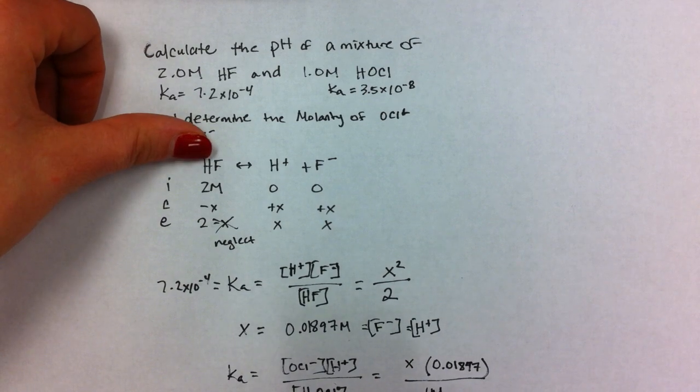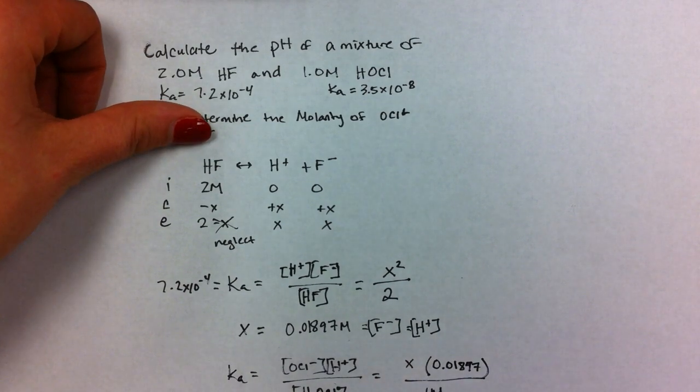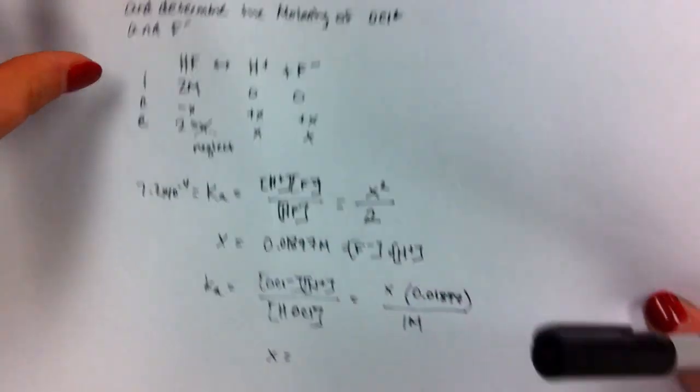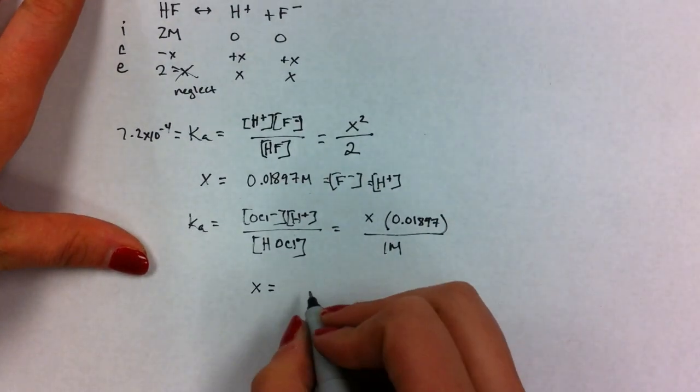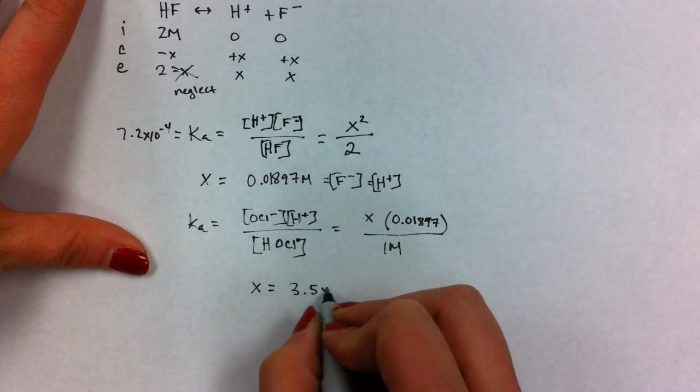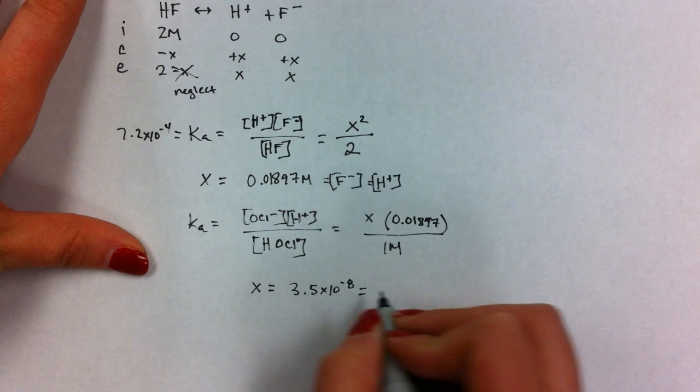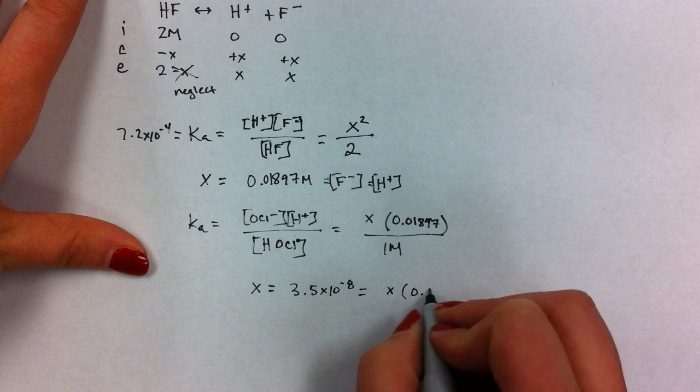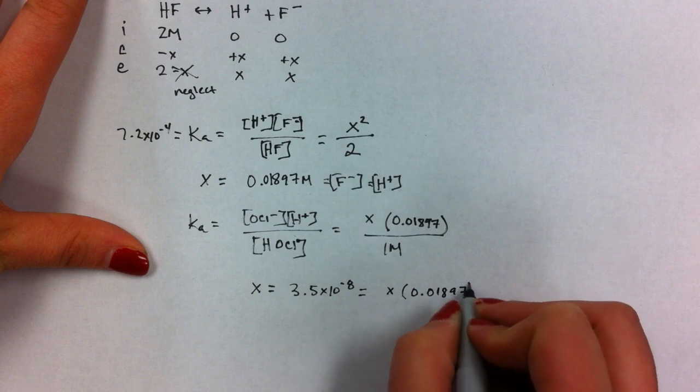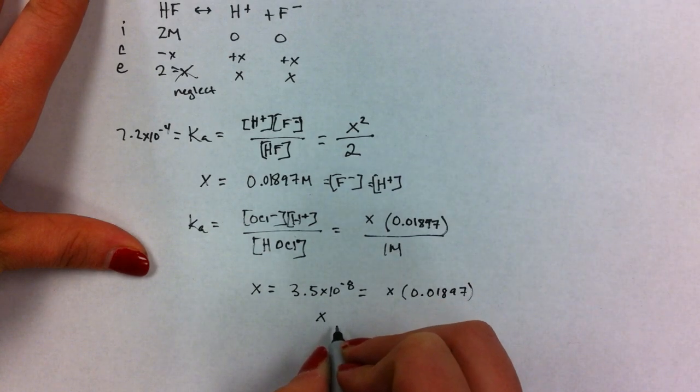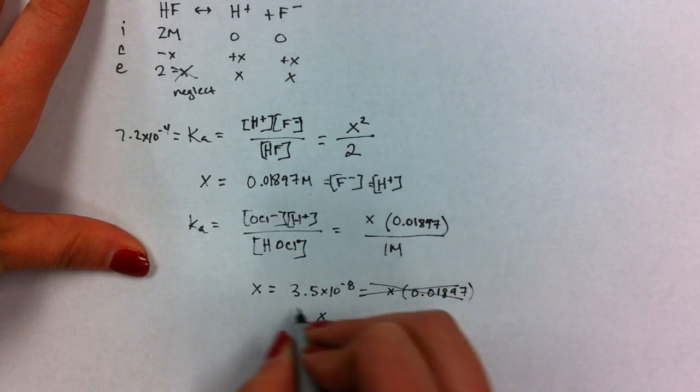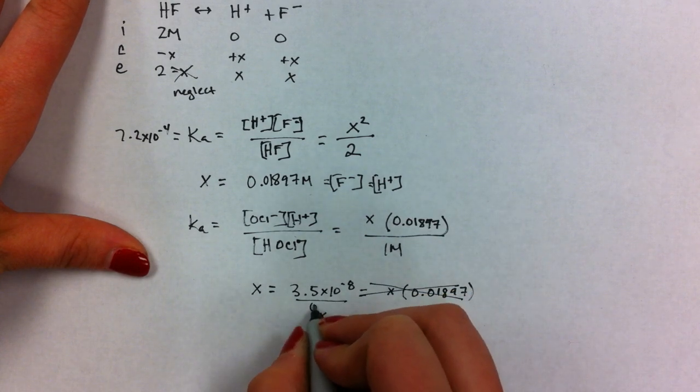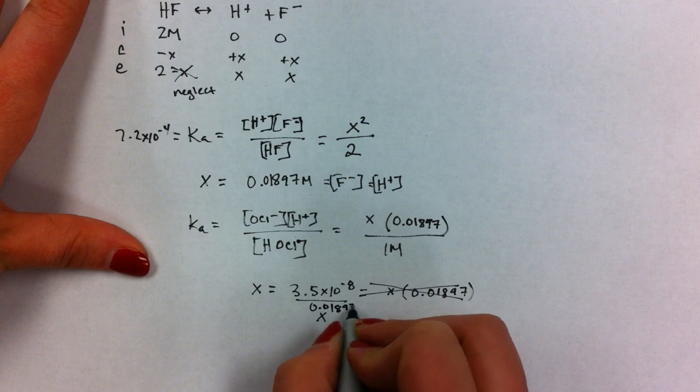So X equals Ka, 3.5 times 10 to the negative eighth, times one divided by 0.01897.